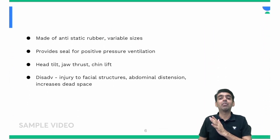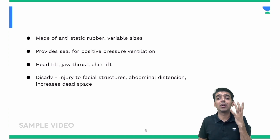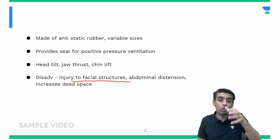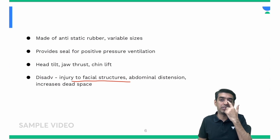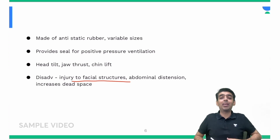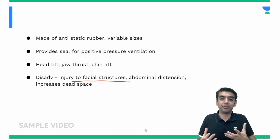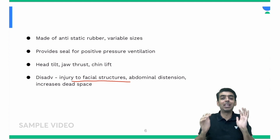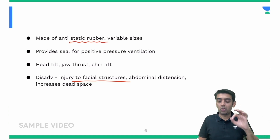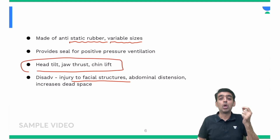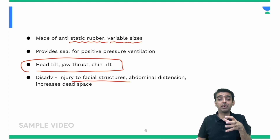The disadvantages of face masks include that they can cause injury to facial structures if held tightly for a long duration during positive pressure ventilation. Air can also enter the stomach causing abdominal distension. Since the mask sits above the normal physiological airways, it increases dead space. These masks are made up of antistatic rubber or silicon, come in variable sizes, and airway maneuvers such as head tilt, jaw thrust, and chin lift are all performed while holding the mask.